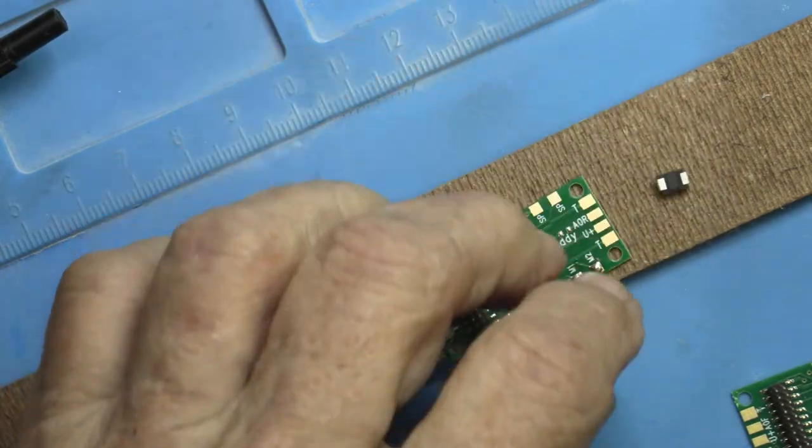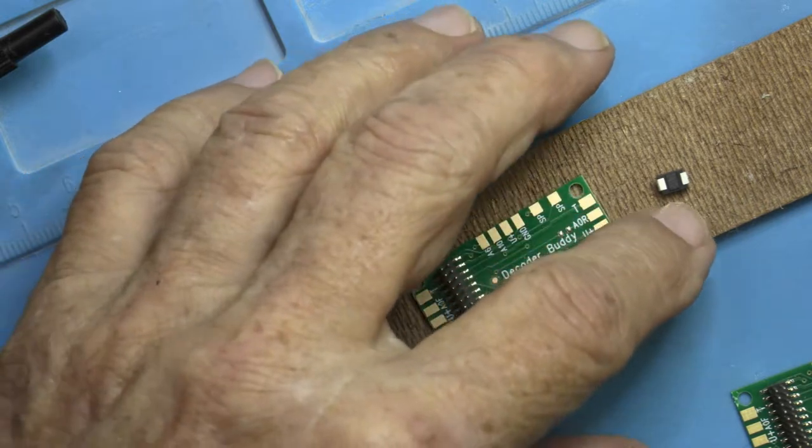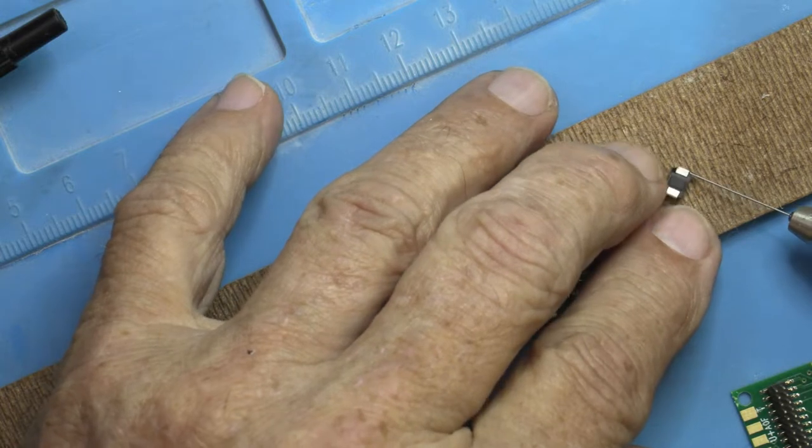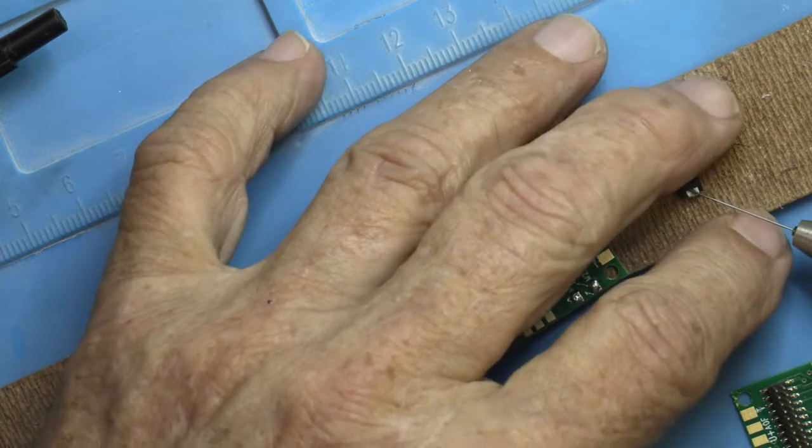So now we have two tinned pads, and there's the TVS. And what I'm going to do is just take and add just a little bit of flux on each of the pads.